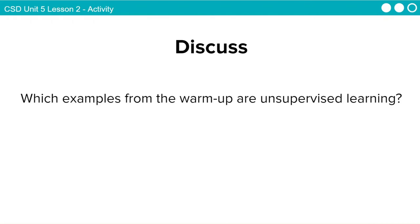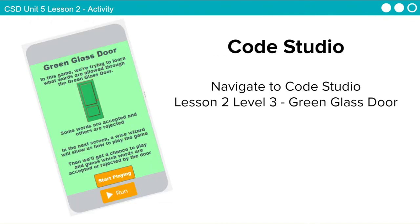Unsupervised learning is one way that computers can learn something new, but this isn't like what we did yesterday. Yesterday, we helped the computer learn something new by providing examples. This is like when you get older and a coach or mentor can help teach you something new. In the next level, we're going to try and learn something new with somebody's help. So now we're going to go back to Code Studio. We're going to click on the next level to go to level three, and this is called the green glass door.